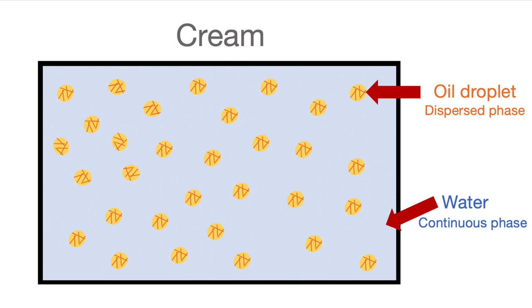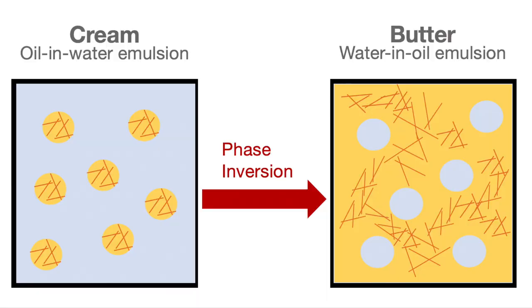Cream is called an oil-in-water emulsion because the oil droplets are held within the water. What's interesting is that butter is also an emulsion, but it's a water-in-oil emulsion — the opposite of cream. So during the process of converting cream to butter, we have phase inversion: in cream, the oil droplets were the dispersed phase, but in butter the oil is the continuous phase, and the water becomes the dispersed phase.